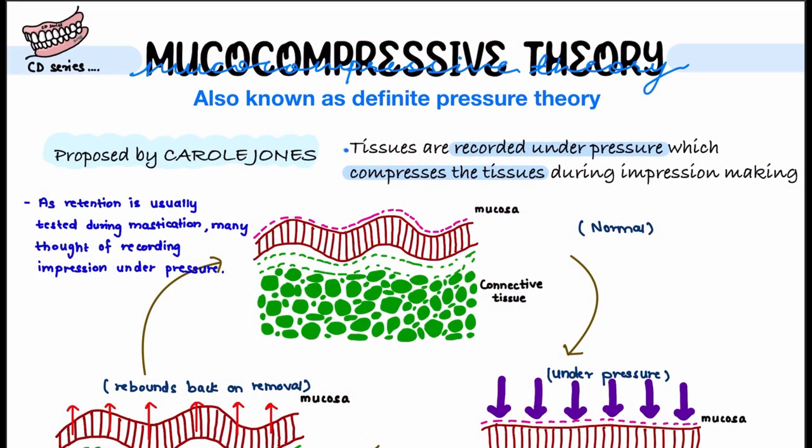Welcome back. In today's video we are going to see another theory of impression making in complete denture — that is mucocompressive theory. Muco refers to mucosa, and compressive is when you are making the impression by compressing the mucosa, meaning the mucosa is under pressure. Therefore, it is also known as definite pressure theory.